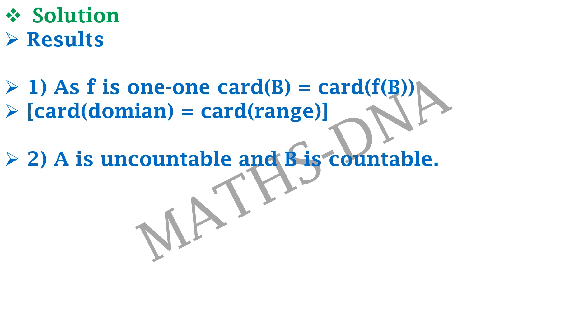Second, A is uncountable because it is a subset of R and it is already given uncountable in the question itself, and B is countable because it is an infinite but proper subset of N. So its subset B is also countable.